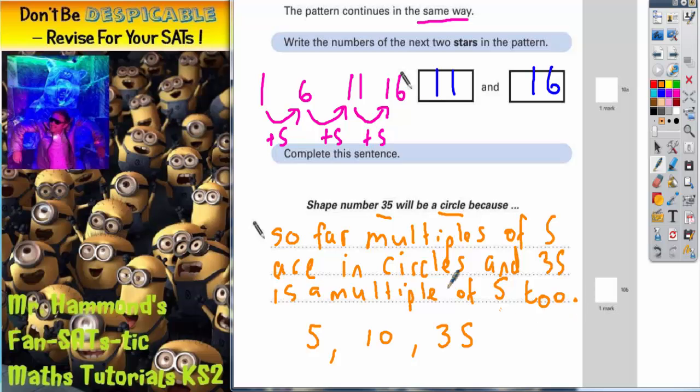And that's all you need to say: so far, multiples of 5 are in circles - that's 5 and 10 - and 35 is also a multiple of 5, so that's going to be in a circle too.